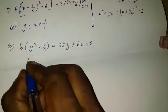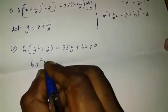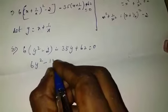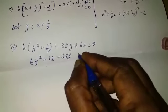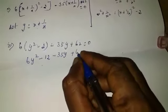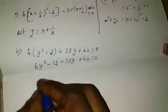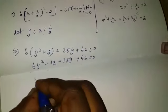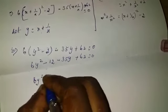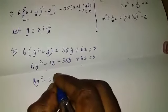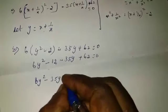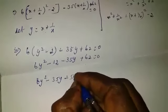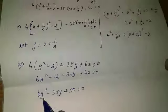Simplify the equation: 6y² minus 12 minus 35y plus 62 equal to 0, which gives 6y² minus 35y plus 50 equal to 0. This is a quadratic equation.